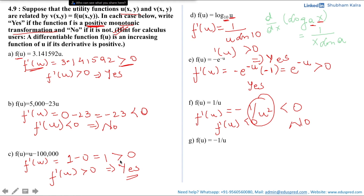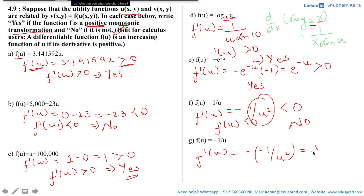Part 7: f(u) = -1/u. Differentiating: f′(u) = -(-1/u²) = 1/u², which is positive. Thus f′(u) > 0, and yes, this is a positive monotonic transformation.